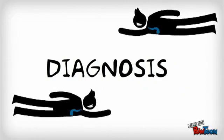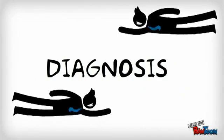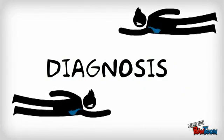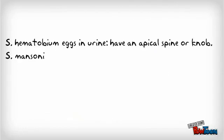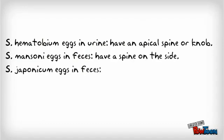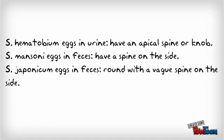Diagnosis is according to the morphology of the eggs. S. hematobium eggs in urine have an apical spine or knob. S. mansoni eggs in the feces have a spine on the side. S. japonicum eggs in the feces are round with a vague lateral spine.